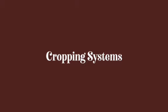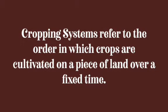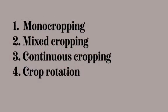This lesson is a continuation of the previous lesson, where I explained cropping systems as the order in which crops are cultivated on a piece of land over a period of time — the sequence of crop production adopted by farmers. In the previous lesson, we listed the types of cropping systems commonly practiced in Nigeria and explained mono cropping and mixed cropping. In this lesson, I will be explaining continuous cropping and crop rotation.